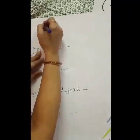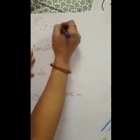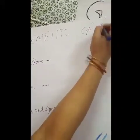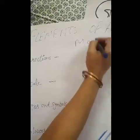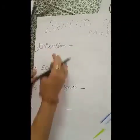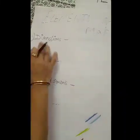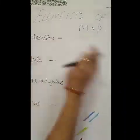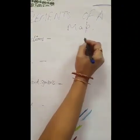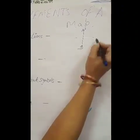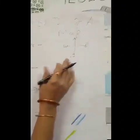The third topic is elements of a map. These are: direction, scale, signs and symbols, and colors. First is direction. We all know that there are four types of directions — north, south, east and west.